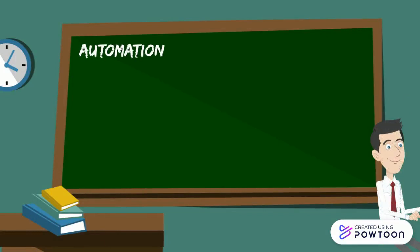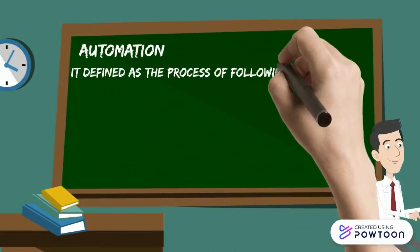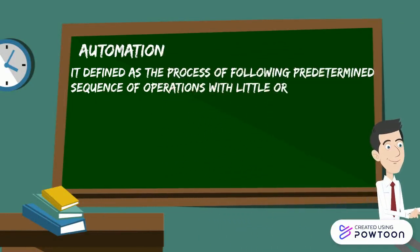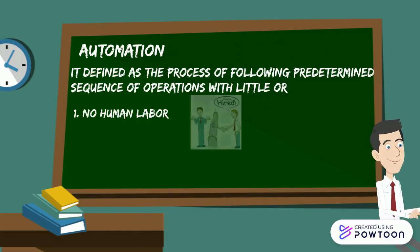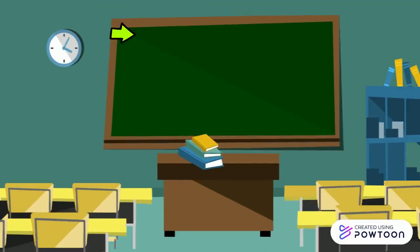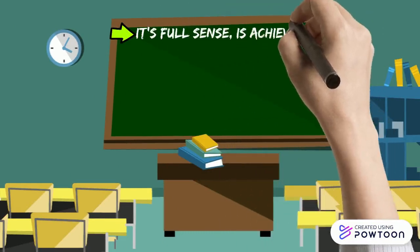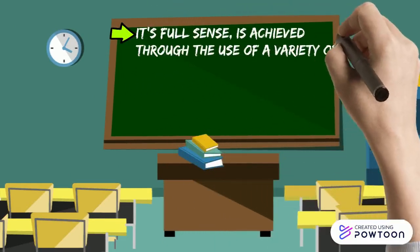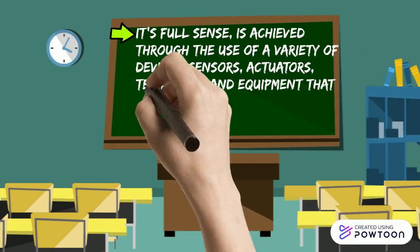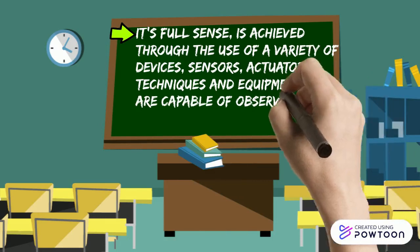Moving to automation, it is defined as the process of following a predetermined sequence of operations with little or no human labor, meaning the work is carried out by robots using specialized equipment and devices that perform and control manufacturing processes. Automation in the full sense is achieved through the use of a variety of devices, sensors, actuators, techniques, and equipment that are capable of observing the manufacturing processes.